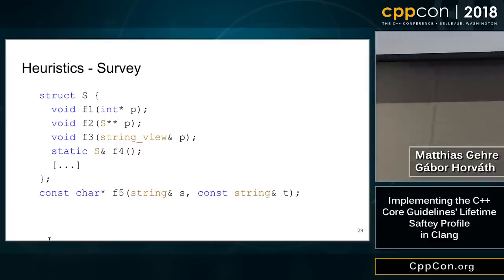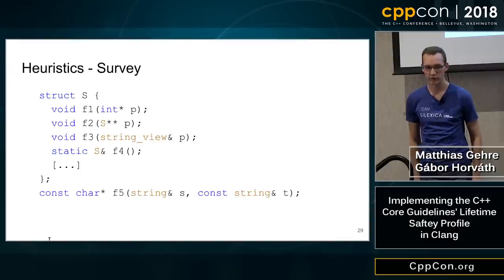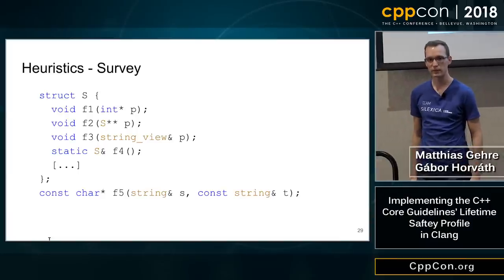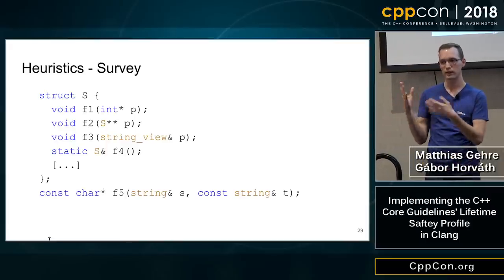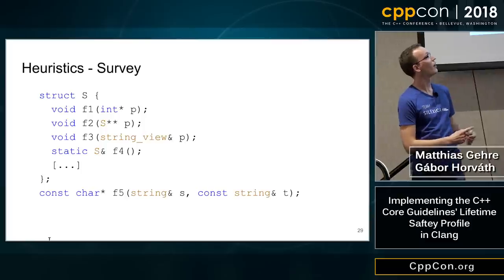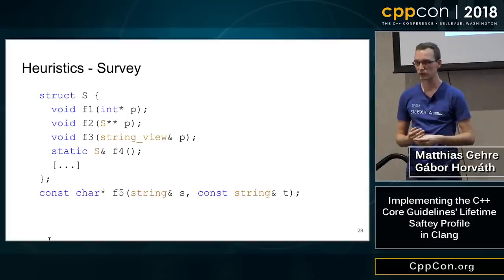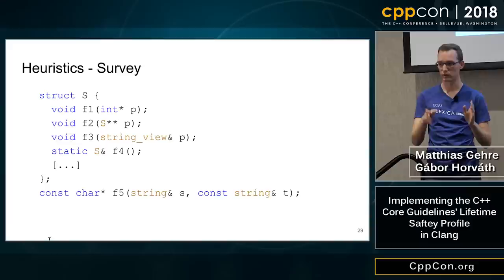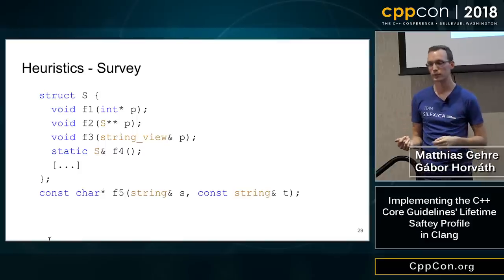Let's look at a quick survey. Consider some functions whose bodies you don't see. For F1 taking a pointer: who thinks it's okay to pass a dangling pointer? Zero people — it never makes sense because a function can't check for dangling. Who thinks it's okay to pass null? About 60%. For F2 taking a pointer-to-pointer: it's split between in-parameter, in/out-parameter, and out-only. For F3 with string_view by reference: almost everyone says in/out. For F4, the lifetime of the returned reference — audience suggests singleton. For F5 returning const char* from a string and const string — most people say S or T, we don't really know.